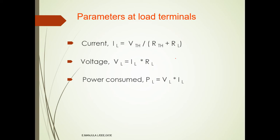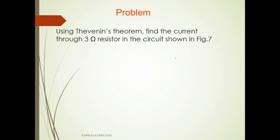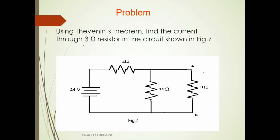We will now understand Thevenin's theorem by applying it to a problem. Using Thevenin's theorem, find the current through the 3-ohm resistance in the circuit shown. The given circuit consists of a 24-volt battery, a 4-ohm resistance, a 12-ohm resistance, and a 3-ohm load resistance connected across terminals A and B.